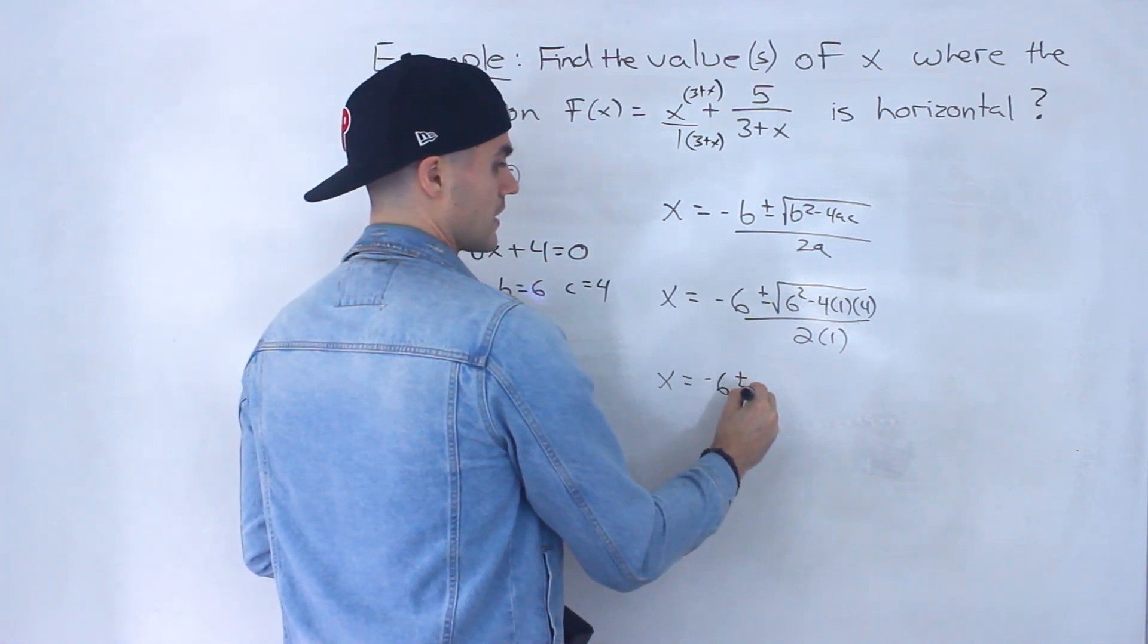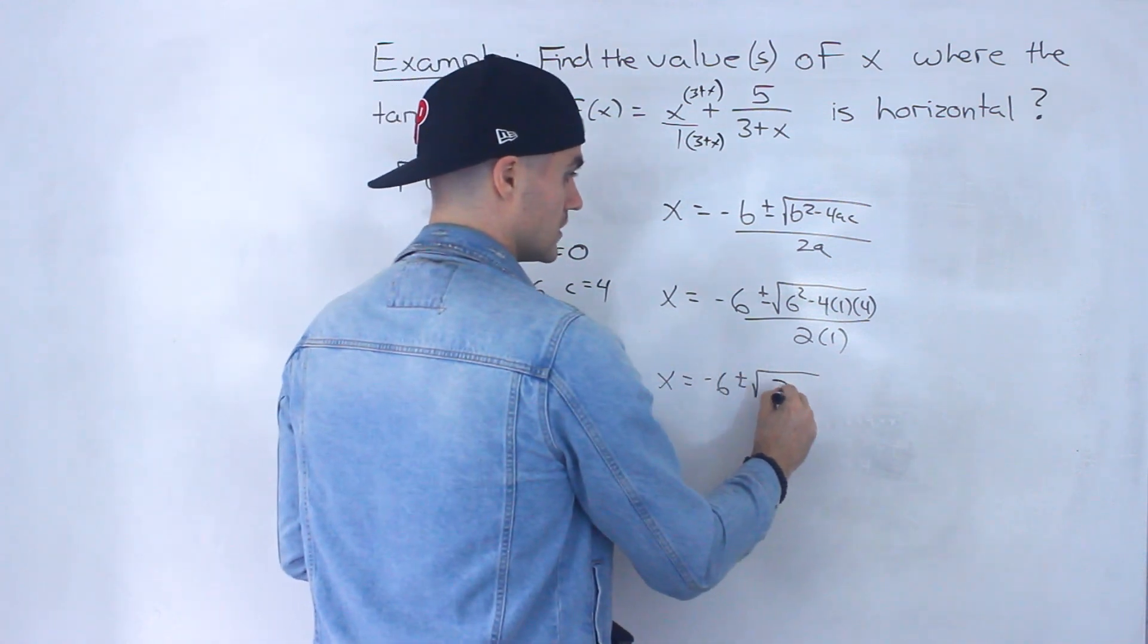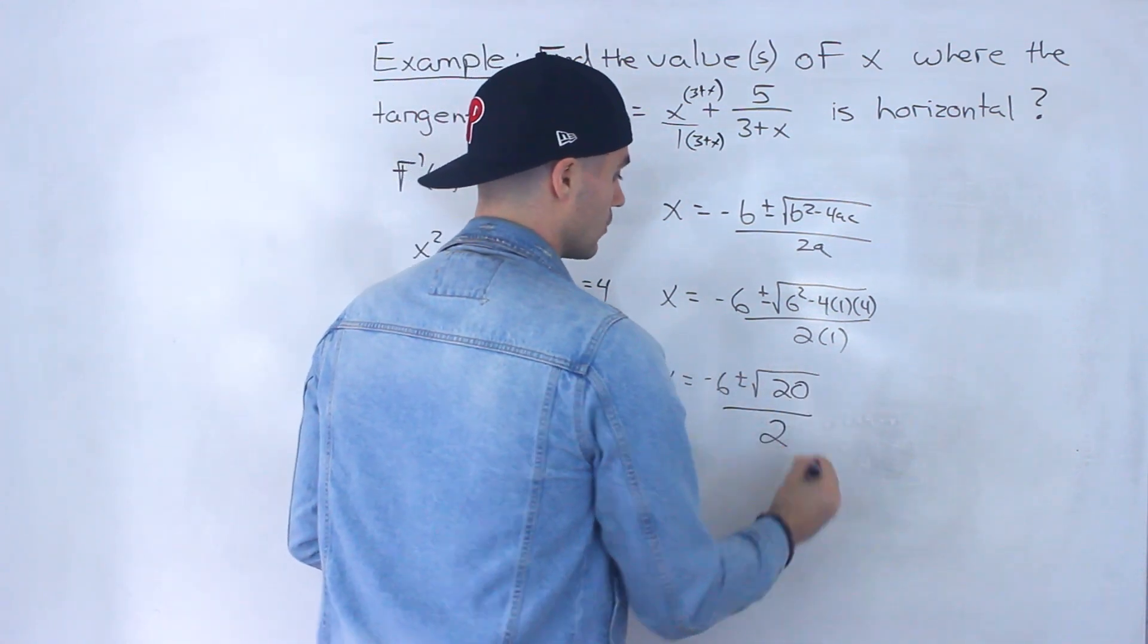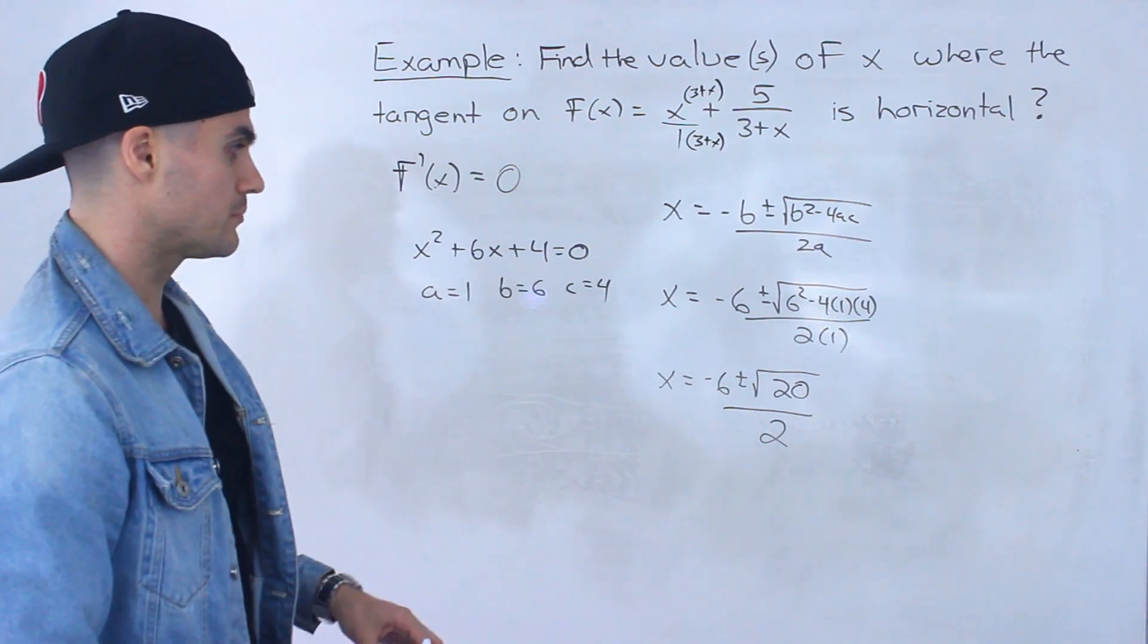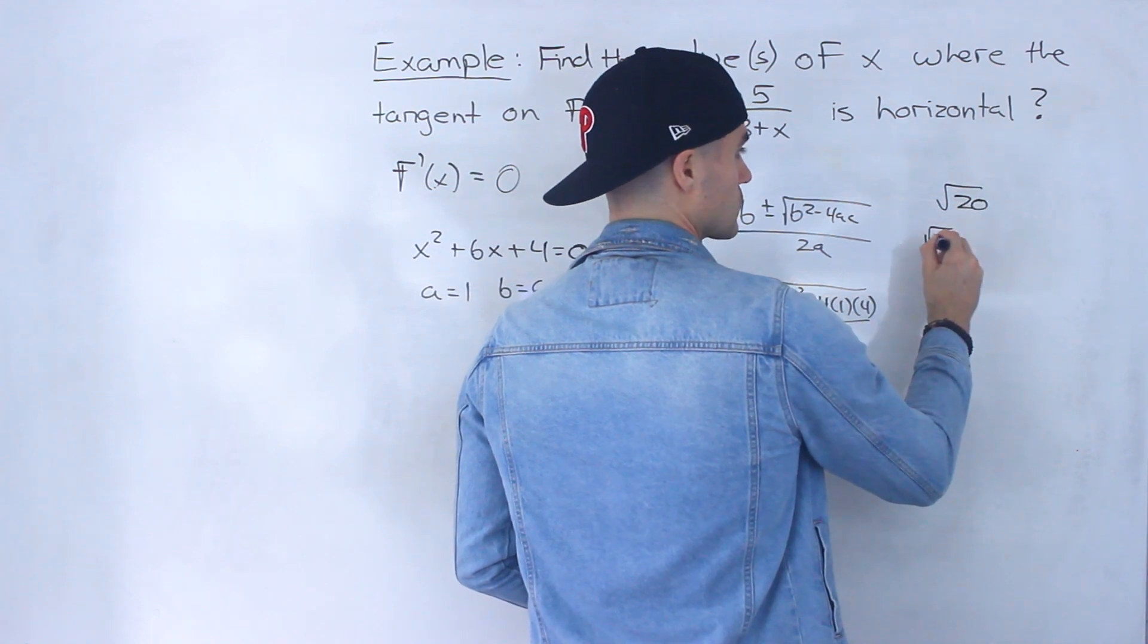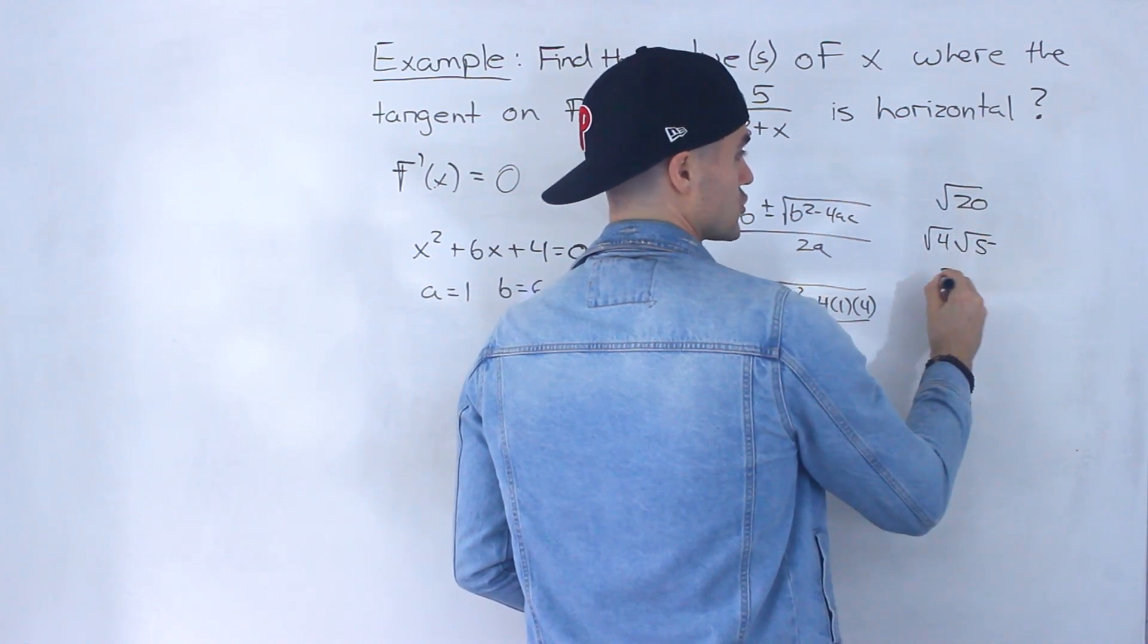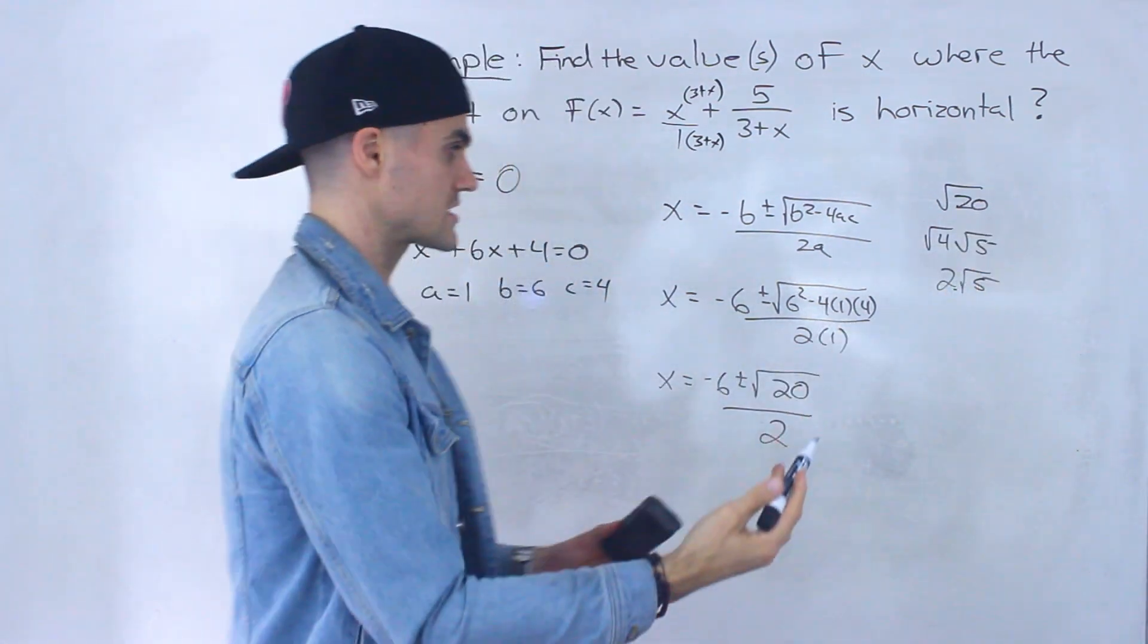And so this would be -6 ± √(36 - 16) gives us √20, and that's going to be all over 2. And then this here we could simplify further because √20 is √4 times √5, which is 2√5. √20, 2√5, those are the same thing.